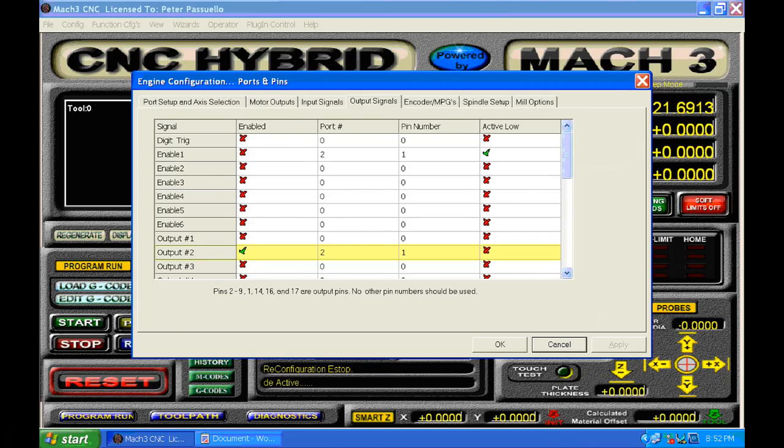For this to work you need to configure Mach 3. I've selected output 2 which by coincidence is the output number on the Gecko G540. Though the numbers do not have to match. I've selected enable. I've then selected port number 2 which is port 2 on my UC300 Ethernet controller. If you're doing this connected via your parallel port it would of course be port 1. I'm using pin 1 which is the pin going into the Gecko G540 for that particular port.